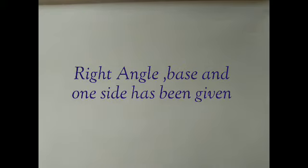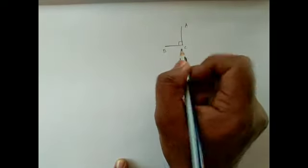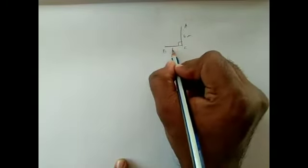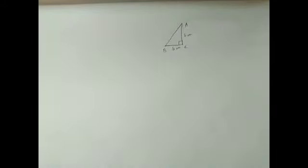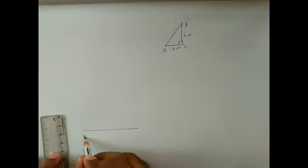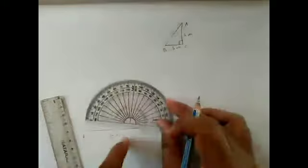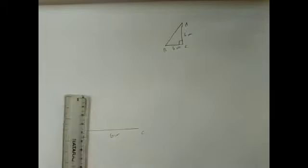Now we are going to construct a right-angled isosceles triangle. They have given that angle ACB is 90 degrees, and the equal sides AC and BC are both 6 cm. Without using the protractor we are going to construct 90 degrees. First we draw the base BC as 6 cm, and then we need to construct 90 degrees at vertex C.